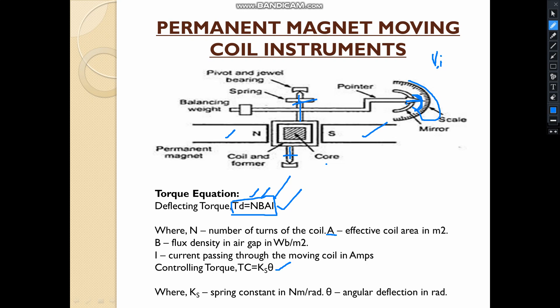The spindle provides the necessary controlling torque. This restoring torque is produced by the torsional head, and the controlling torque Tc equals Ks times theta, where Ks is the spring constant and theta is the angular deflection in radians.